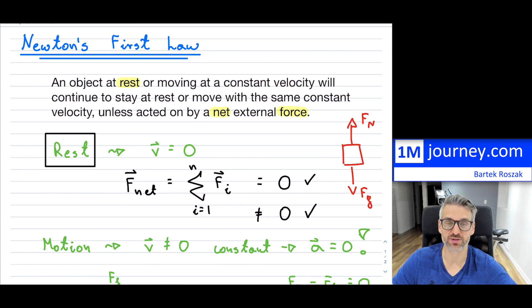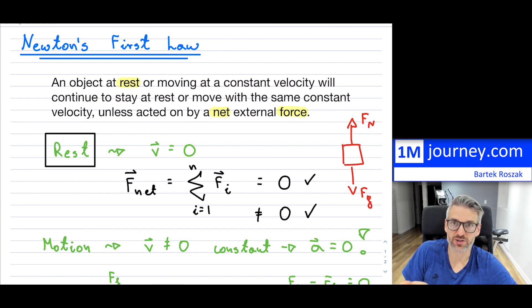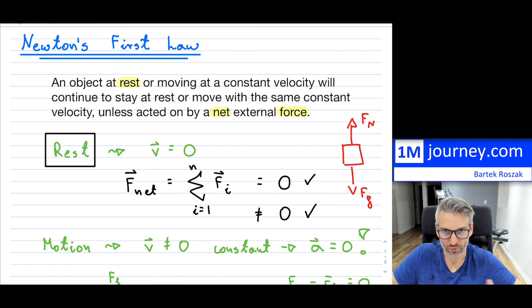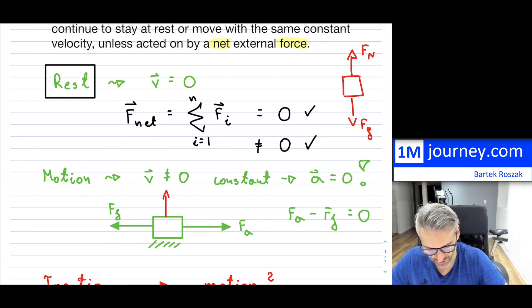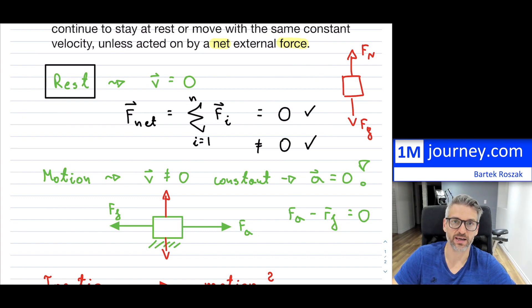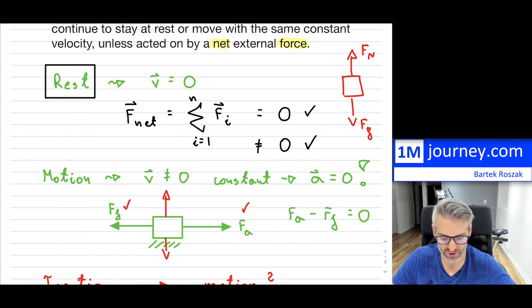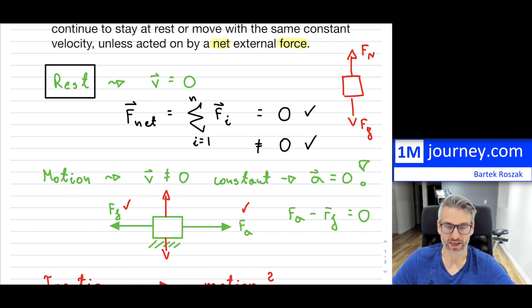If the chair breaks or someone takes it away, I'll fall to the ground because there's now a net external force — gravity acts without being counterbalanced by the normal force. In the car example, you still have normal force and gravity in the y-direction, but they cancel because the car doesn't fall through the ground. That means the x-components must also cancel — you might still apply a force, but you're just counteracting all other forces trying to slow the object down.